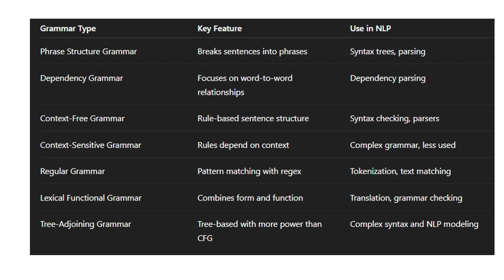Other than this, we have context-sensitive grammar that focuses on rules depending on context. Whatever rules we are using in AI systems depend on the context of the given statement. It uses complex grammar and is less used as compared to the other three grammars.